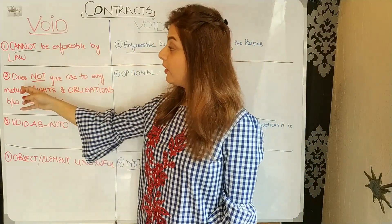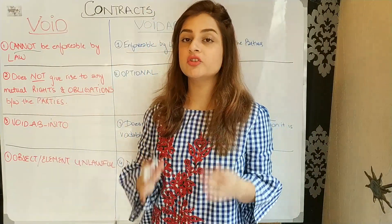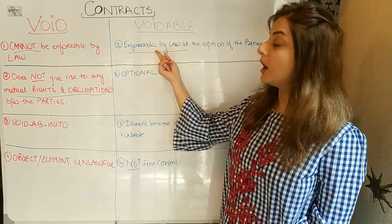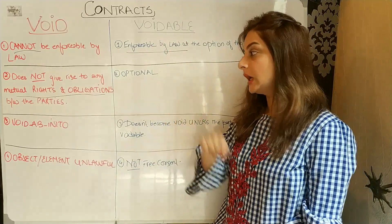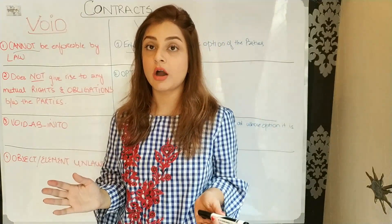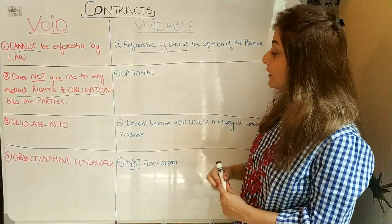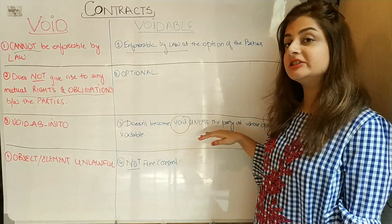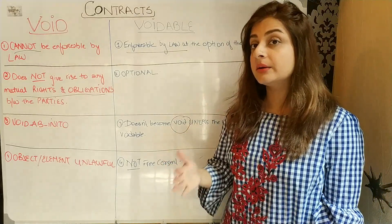Number two difference: a void contract does not give rise to any mutual rights and obligations between the parties. In a voidable contract, if it is enforceable by law at the option of the parties, then the rights and obligations will arise. Number three difference: void is null and void — there is no chance that it can be enforced at law. However, in a voidable contract, it doesn't become void unless the party at whose option it is voidable chooses to void it.